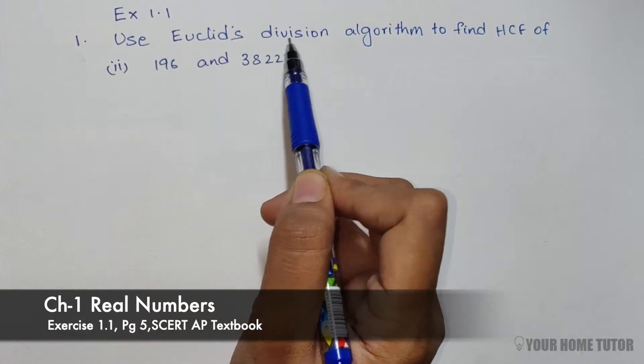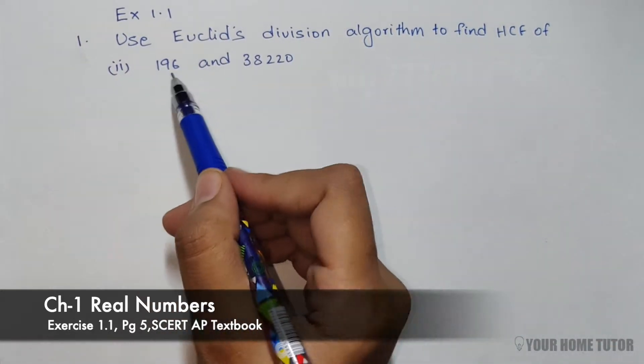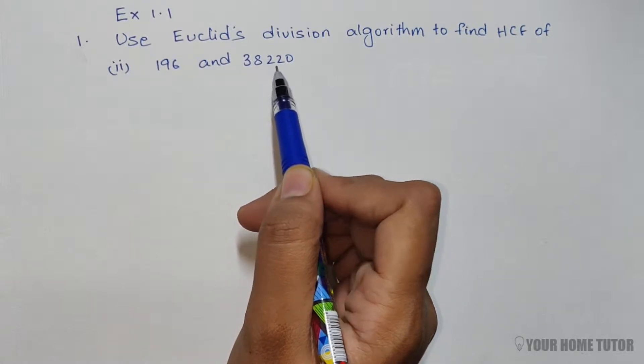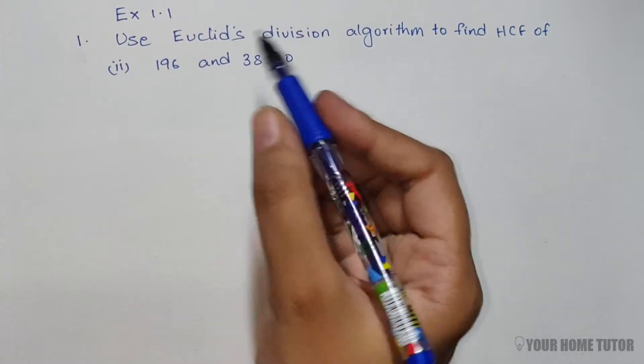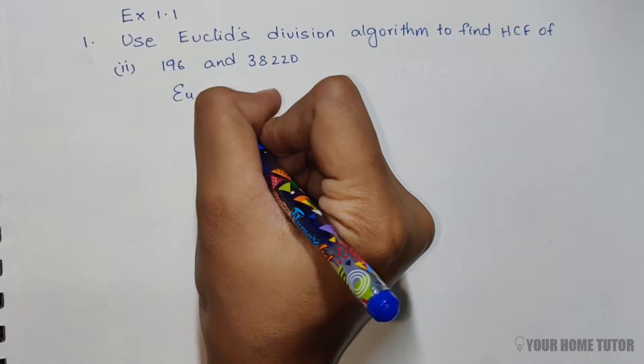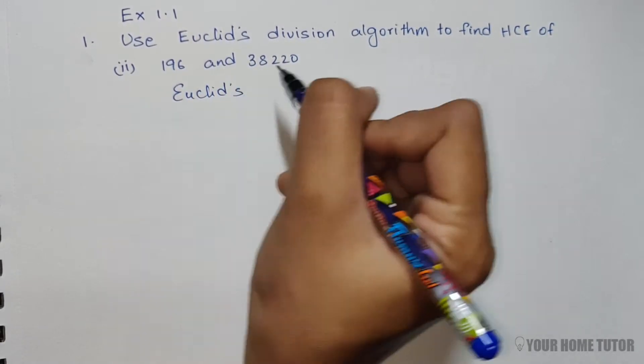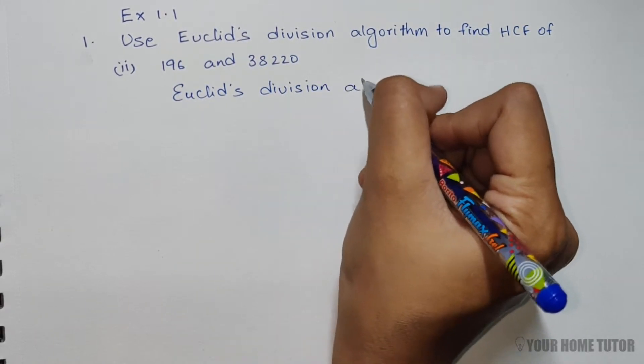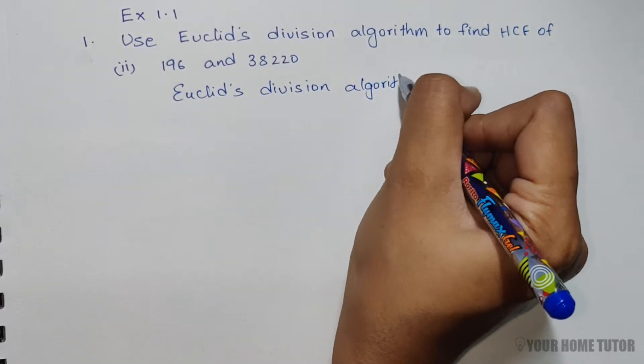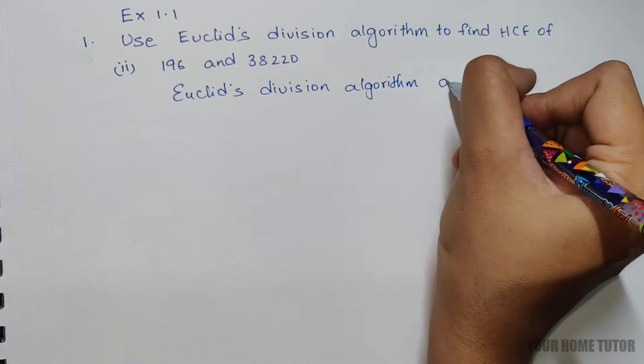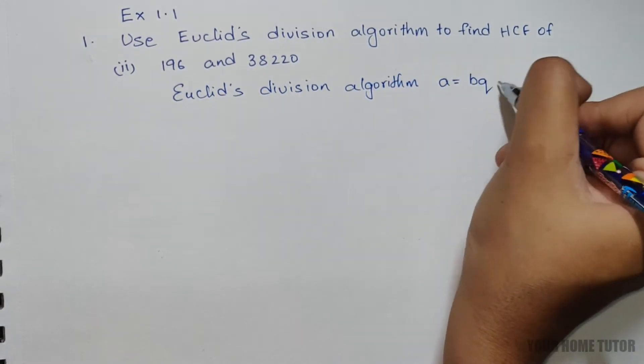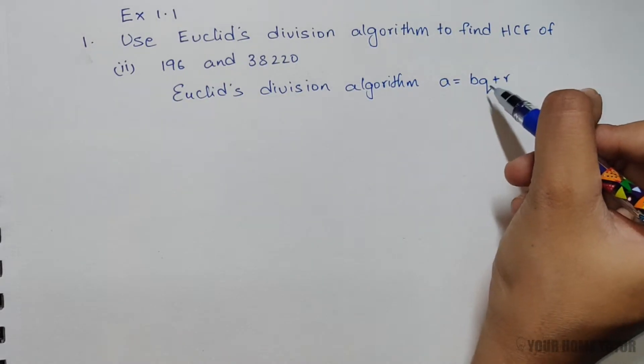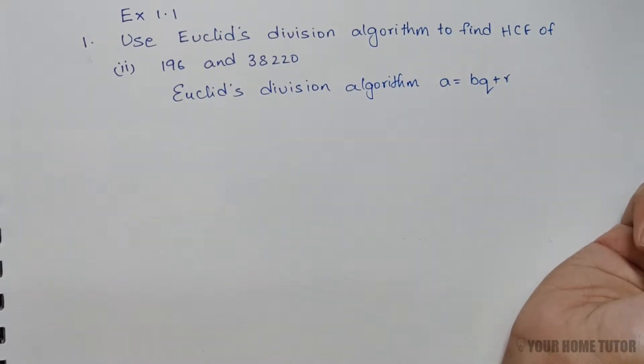Use Euclid's division algorithm to find the HCF of 196 and 38,220. Euclid's division algorithm states A equals BQ plus R, where Q is the quotient, R is the remainder, and A and B are two positive integers.